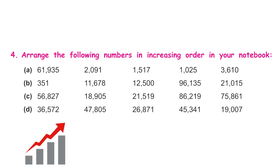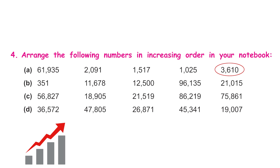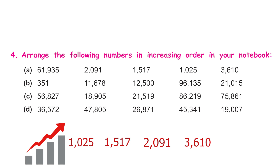Arrange the following numbers in increasing order. Count the digits: the first number has five digits, the others have four each. In increasing order, start from the smallest: 1,025 comes first, then 1,517, then 2,091, then 3,610, and finally 61,935. This is how you do the rest of the sums.